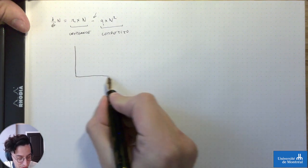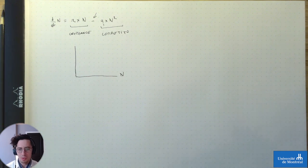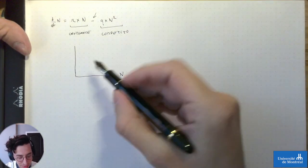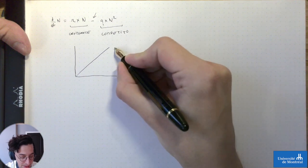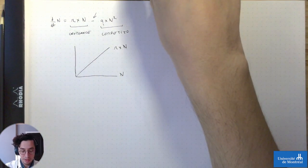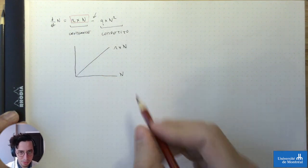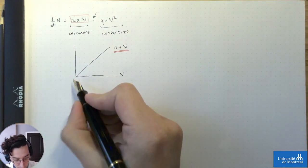On va faire ça de manière assez simple avec une figure en fonction de n. La majorité du temps, ce qui nous intéresse, c'est de savoir comment les variables vont se comporter au cours du temps. Là, on peut commencer à représenter les comportements des parties du modèle en fonction de l'état du système, donc ici de la taille de population. La première chose qu'on va faire, ça va être de représenter r×n. R×n, c'est une droite qui n'a pas d'intercept, donc qui coupe l'axe à (0,0). Ça, c'est notre processus de croissance.